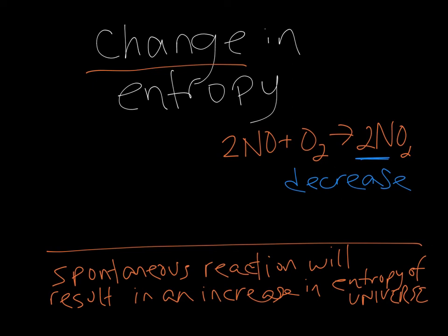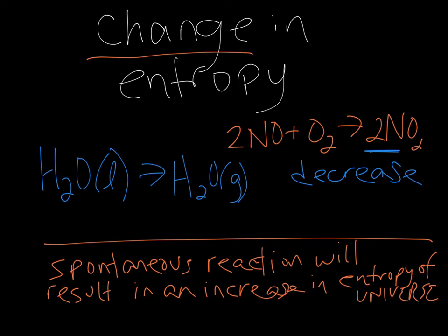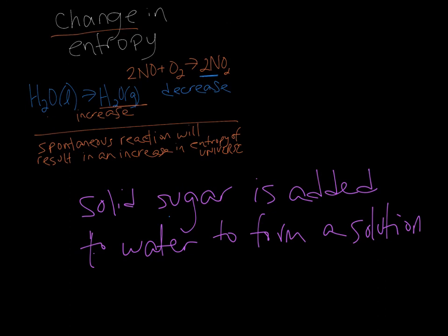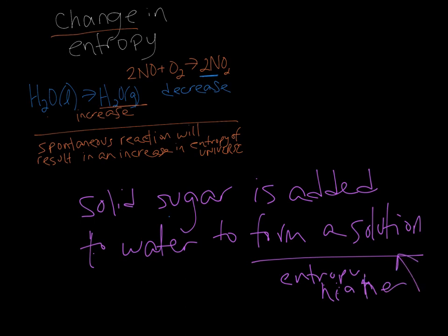Let's look at some examples. Here we have water as a liquid going to water as a gas. You are going to have more opportunities for the molecules to move around and distribute their energy as a gas than as a liquid. So the entropy here would increase as a result of this process. Another example: solid sugar is added to water to form a solution. We said when liquids or solutions are formed from solids, generally the entropy would increase. So as a result of this process, the entropy of your solution at the end would be higher.